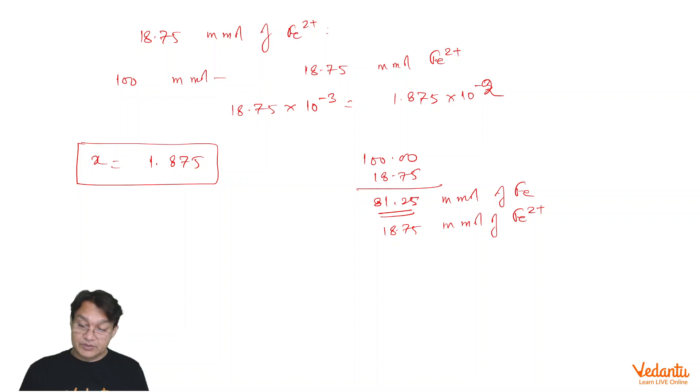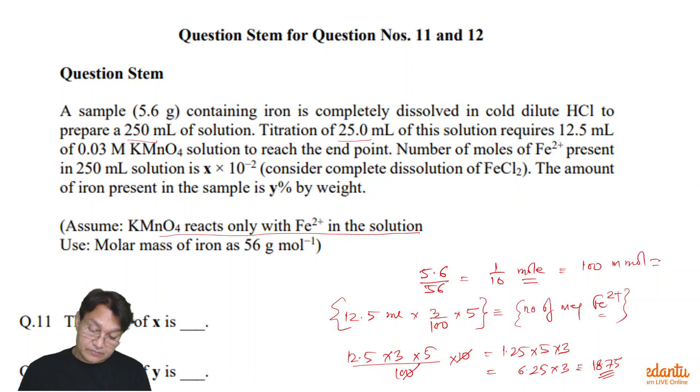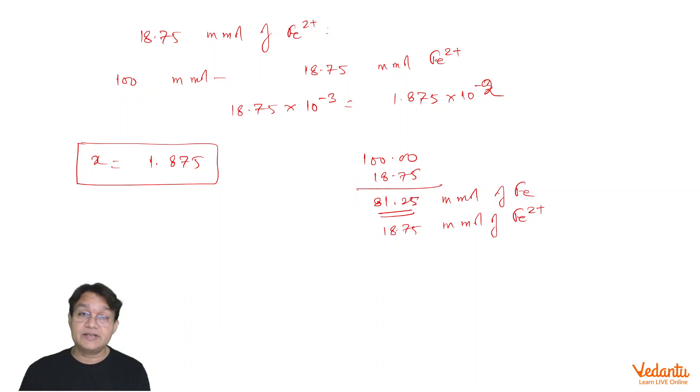So what percentage of iron is there? The amount of iron present in the sample is y percent. We have to find the percentage by weight of the iron in the sample. So of course it is 81.25 percent because mass of iron and mass of Fe2+ is the same. So basically y is equals to 81.25.